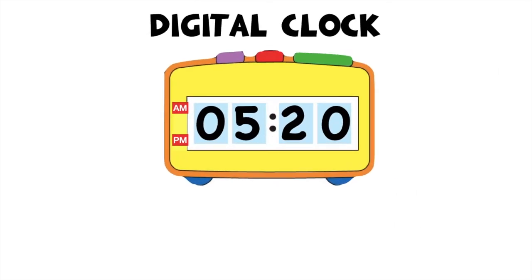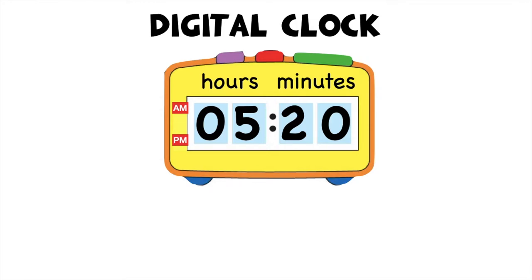A digital clock shows us time directly. In a digital clock, the number on the left tells the hour, while the number on the right tells the minutes. So, children, what time is it? The time is 5:20.